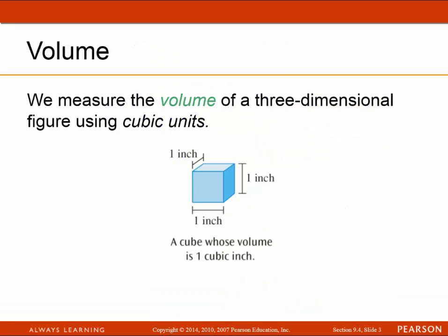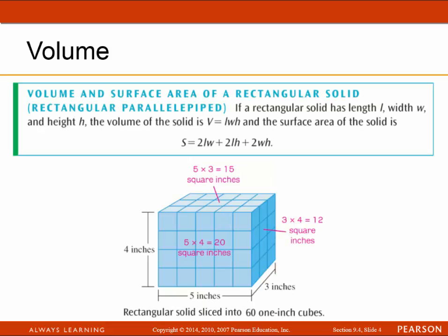We measure the volume of a three-dimensional figure using cubic units. A cube whose volume is one cubic inch has sides that are one inch each. For a rectangular solid with length L, width W, and height H, the volume is equal to L times W times H, and the surface area is equal to 2 times LW plus 2 times LH plus 2 times WH.